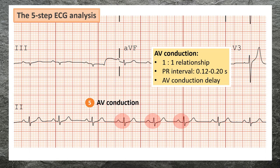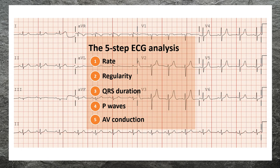Step five: determine AV conduction. Atrial-ventricular AV conduction is evaluated by assessing the relationship between the P waves and QRS complexes. The P wave and QRS complex have a one-to-one relationship, meaning that for every P wave a QRS complex is conducted. The PR interval measures the time from depolarization of the atria to depolarization of the ventricles and reflects a physiological delay in AV conduction imposed by the AV node. To measure the PR interval, count the number of small boxes between the beginning of the P wave and the beginning of the QRS complex, then multiply by 0.04 seconds. The normal PR interval is between 0.12 and 0.20 seconds.